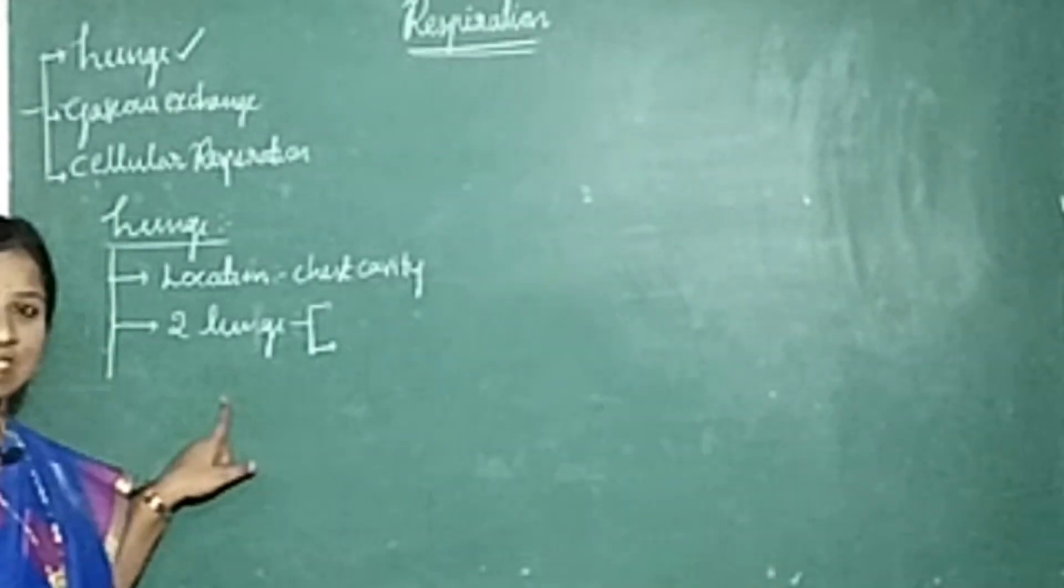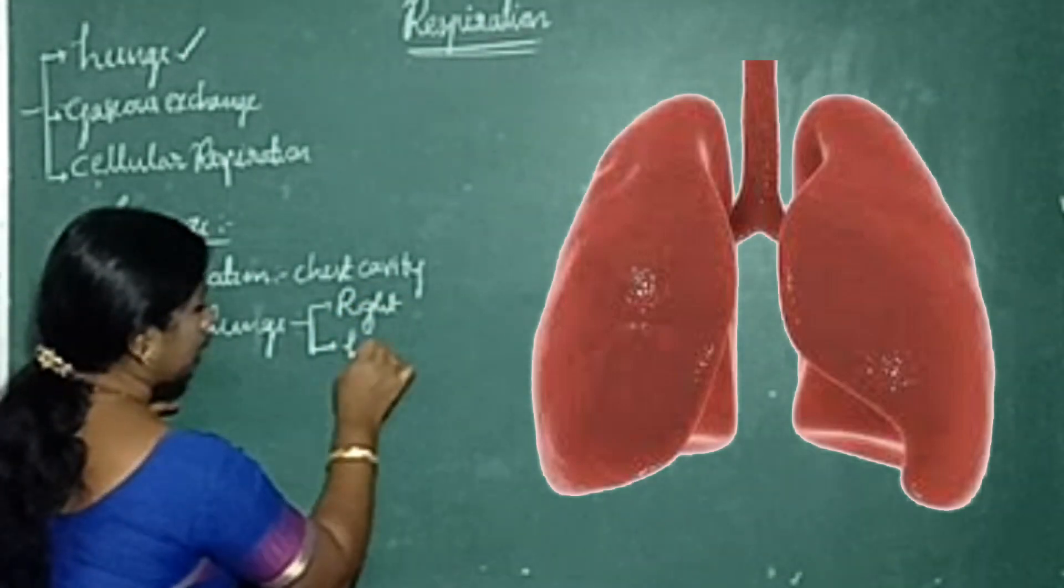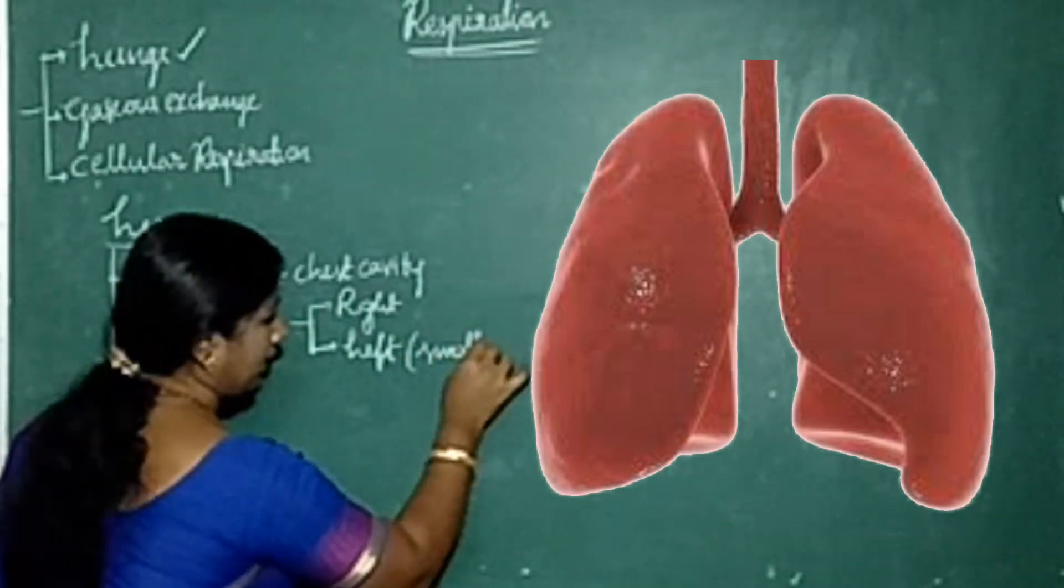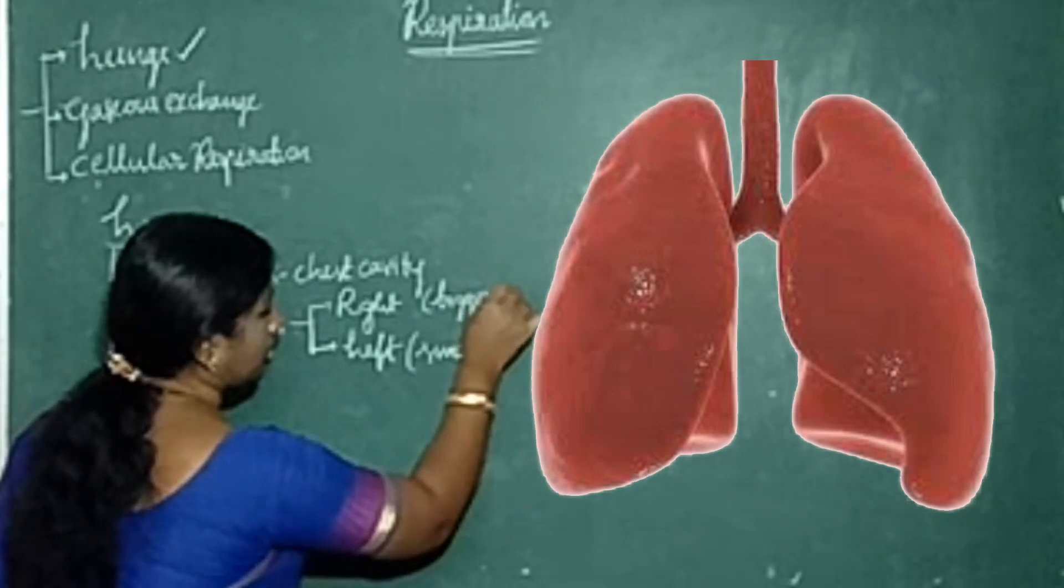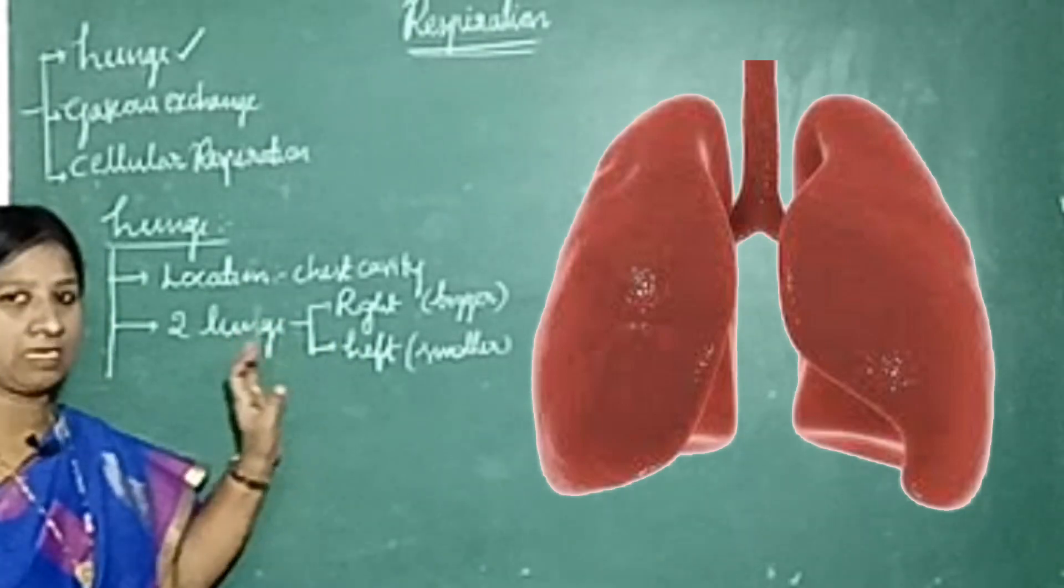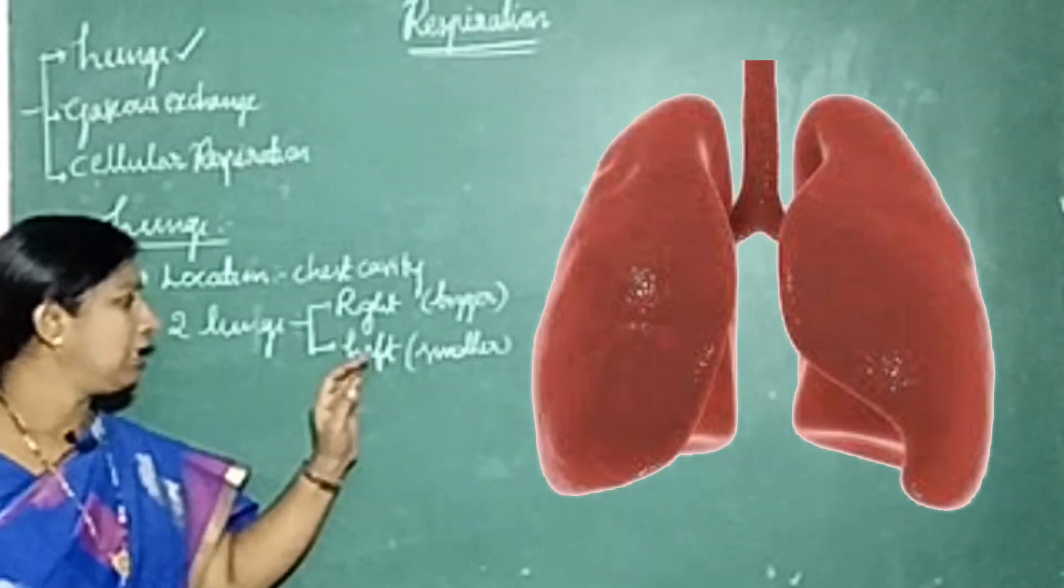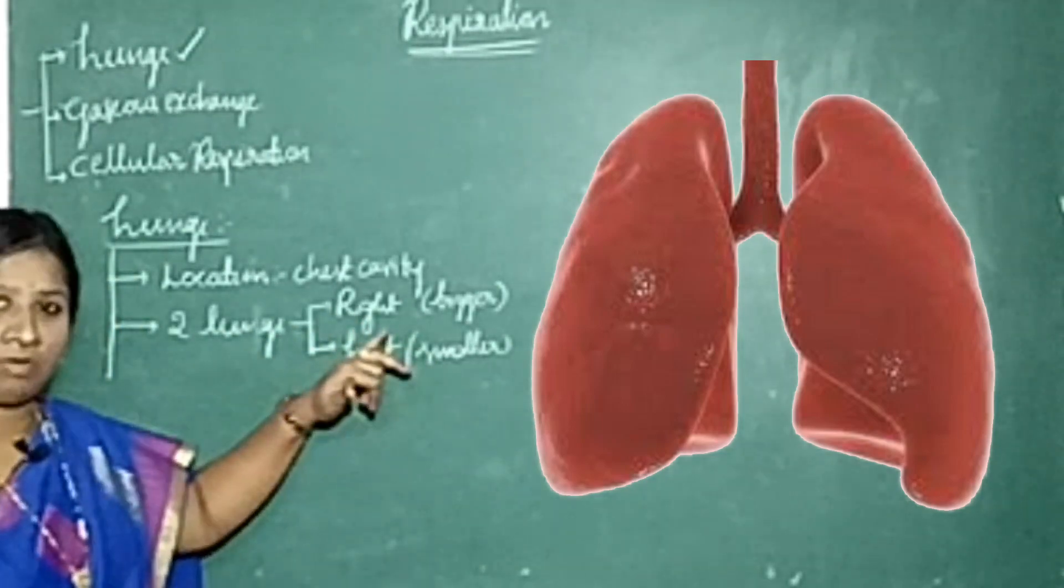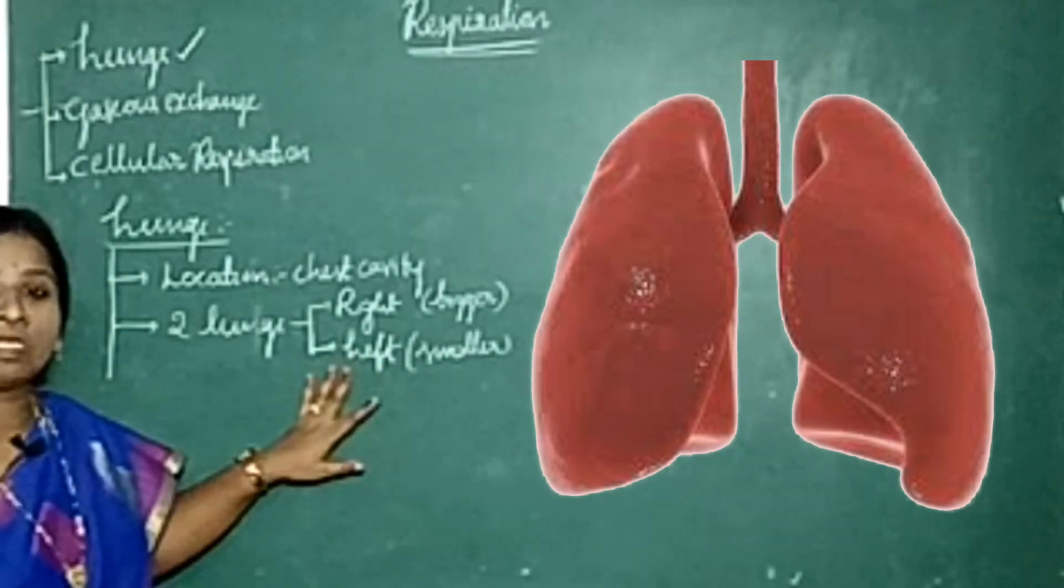Are both the lungs the same size? No. Actually we have two lungs - right lung and left lung. But both are not in the same size. The reason is left lung is slightly smaller whereas right lung is slightly bigger. The left lung is slightly smaller because it gives some space for the accommodation of heart. Because our heart is located slightly towards left side. And another reason, right lung has three lobes whereas left lung has two lobes.